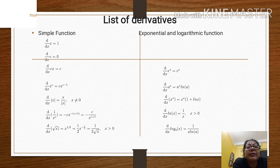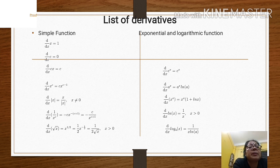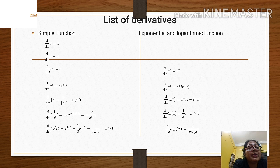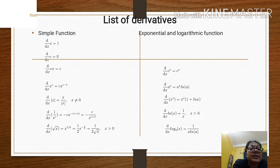The derivative of root x is 1 by 2 root x. For exponential and logarithmic functions: the derivative of e to the power x is e to the power x; the derivative of a to the power x is a to the power x times log a; and the derivative of log x is 1 by x.